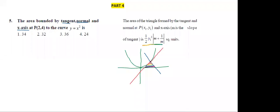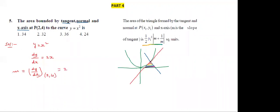The shortcut formula is: one-half times y₁² times |M + 1/M|. M is the slope of the tangent. From y = x², differentiate once: dy/dx = 2x. Slope M = dy/dx at point P(2,4). Substituting x = 2: M = 2×2 = 4. So M = 4, and the point is x₁=2, y₁=4.